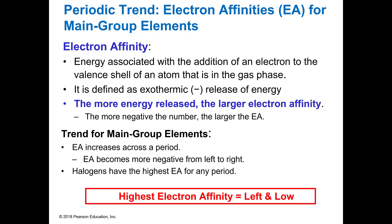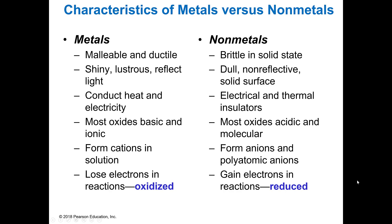Electron affinity is the energy associated with adding an electron to the valence shell of an atom, and the more energy that's released, the larger the electron affinity. We know from our technique that it's left and low, so the higher values are going to be associated with those elements that are lefter and lower.